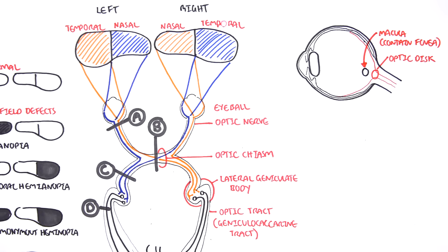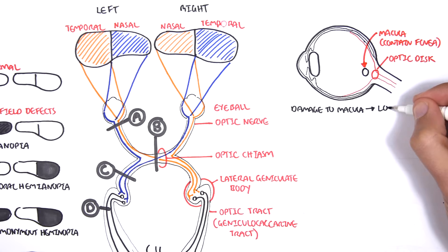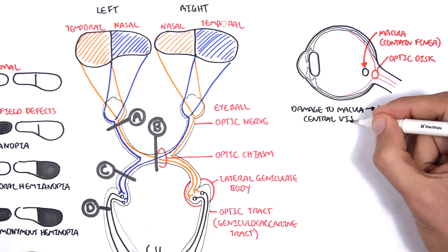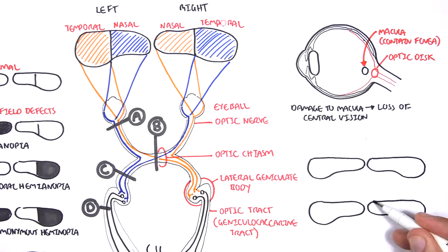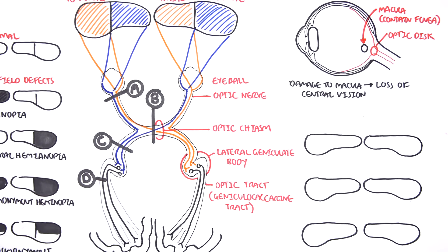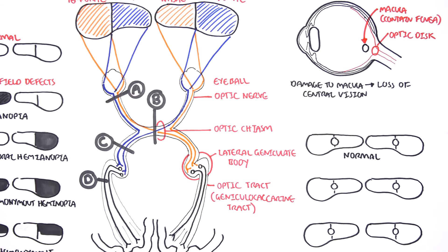So when we damage the macula, we get loss of central vision. We get loss of that high quality vision. So drawing out normal to abnormal, here is normal, and this central visual field is the macula.